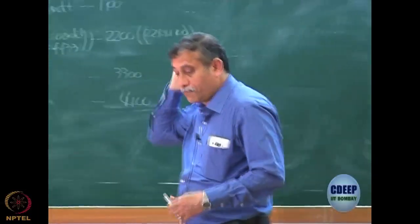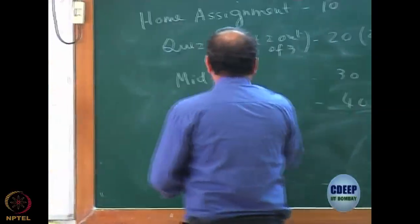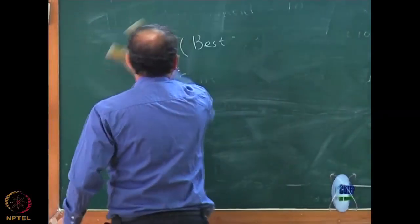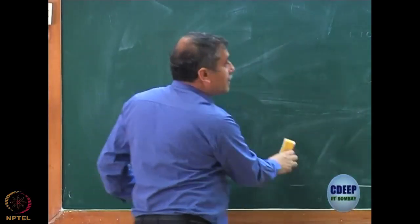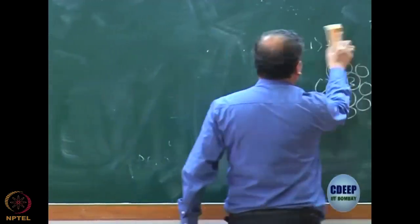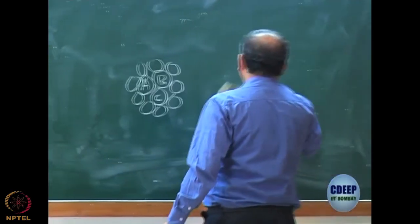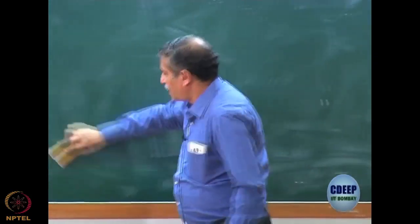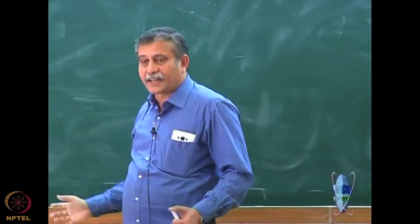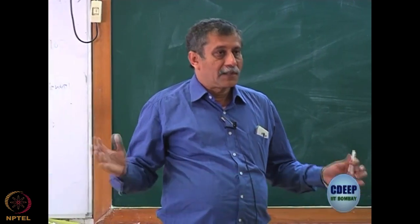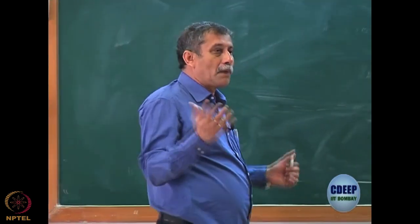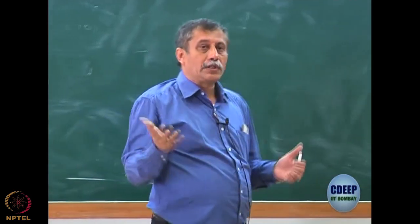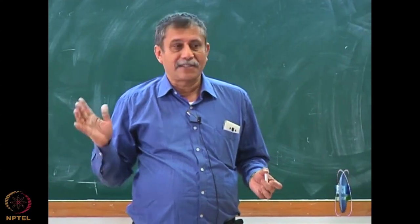We will continue with the postulates first — this is still an overview class before I bring you to the many-electron theory. We completed the measurement part of the postulates. If it is a stationary state, the measurement yields only one value — it always yields one value. If it is not a stationary state, there is only a probability of getting a value, but the value is always one of the eigenvalues of the operator. That is important to note.